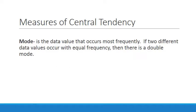Mode is the next measure of central tendency. The mode is the data value that occurs most frequently. If two different data values occur with equal frequency, then there is a double mode. So ties are just fine.